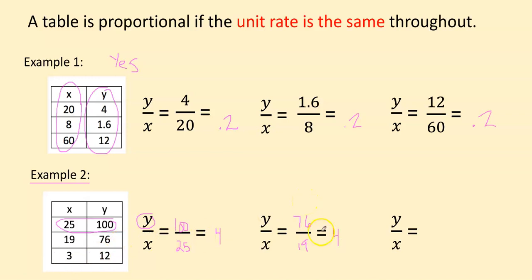All right, let's look at this last one. 12 is the y and x is 3. And 12 divided by 3 is 4. So the unit rate was always 4 throughout the whole table. So this table is also proportional.